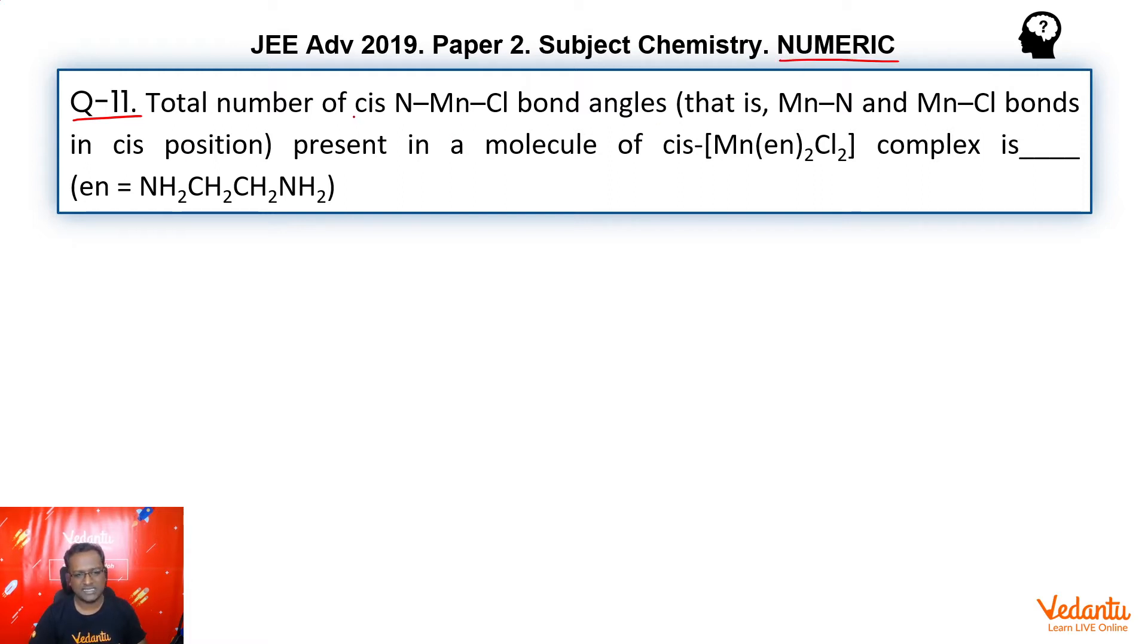It talks about N-Mn-Cl bond angles in a compound. First, let's draw the compound. The compound is Mn(En)2Cl2. So in general, we would write this as M(A)2Cl2, and it's the cis form particularly.